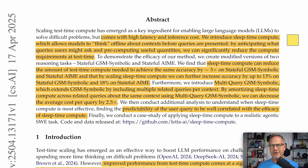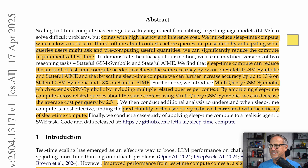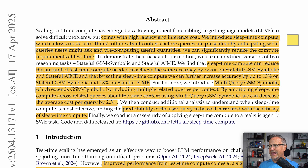Before I read the abstract, I want to give a shout out to the authors — this is a well-written paper, I appreciate that. Scaling test time compute has emerged as a key ingredient for enabling large language models to solve difficult problems, but it comes with high latency and inference costs. Latency is the amount of time it takes, the number of tokens it has to generate, and inference cost is literally the dollars and cents of how much it costs to do this inference.